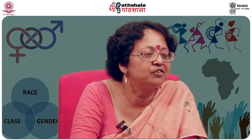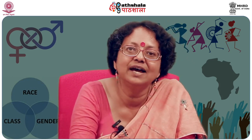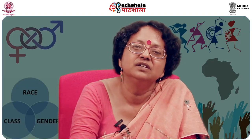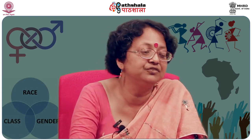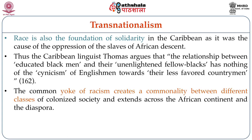What were the results of the dual policy adopted by the colonizer with respect to language and race? Transnationalism was in fact one of the results, because race, while it divides the black from the white, also creates the foundation of solidarity in a place like the Caribbean where different people from different parts of Africa were forced to live together. The Caribbean linguist Thomas argues that the relationship between the educated black men and their unenlightened fellow blacks has nothing of the cynicism of Englishmen towards their less favored countrymen — the common yoke of racism creates a solidarity between different classes of the colonized society.